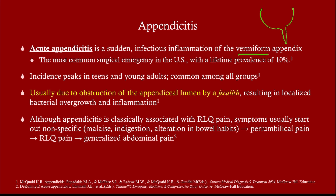Why does appendicitis happen? It's because of an obstruction — a very common mechanism in pathological processes. Think of cholecystitis: a gallstone blocks the neck or cystic duct of the gallbladder, causing stasis and bacterial infection. Similarly, BPH in older men blocks the urethra, increasing the risk of bladder infection. We see this pattern all the time — it's a blockage.